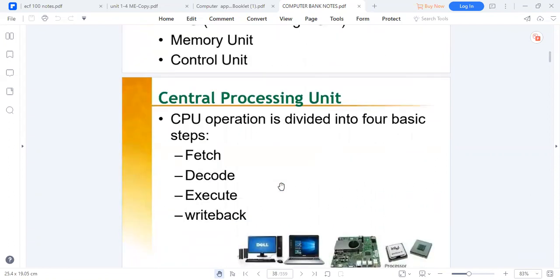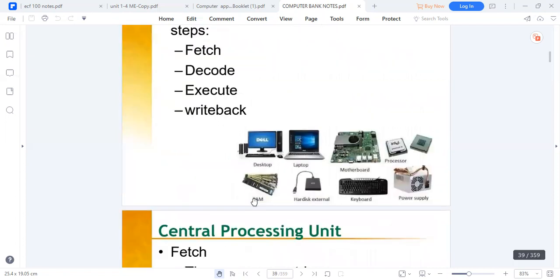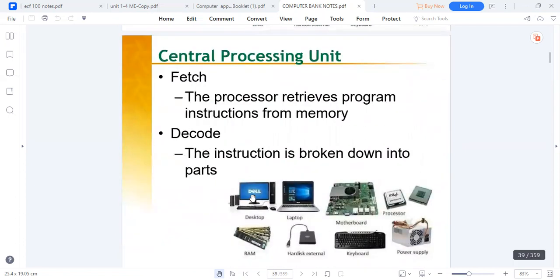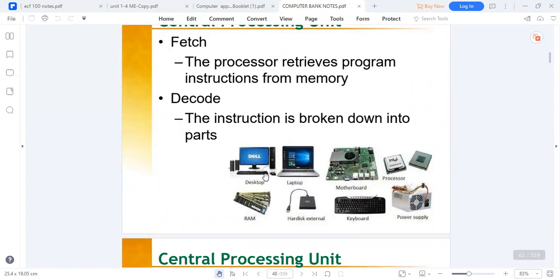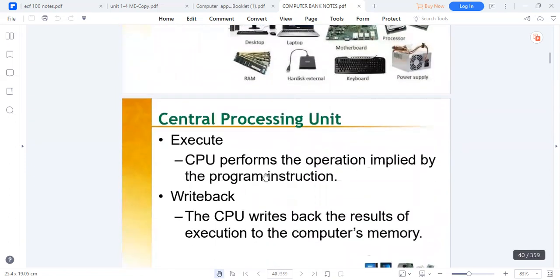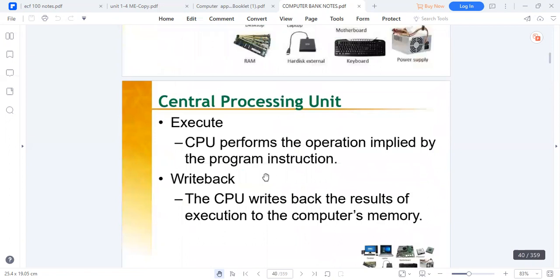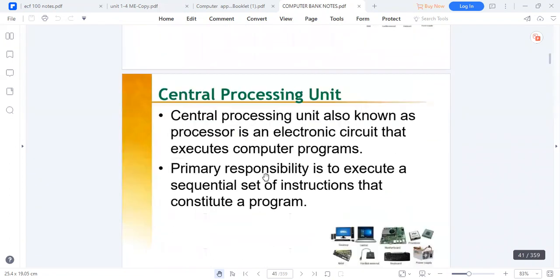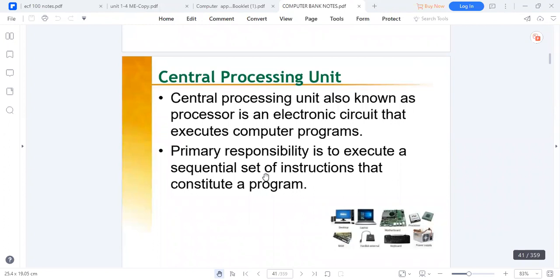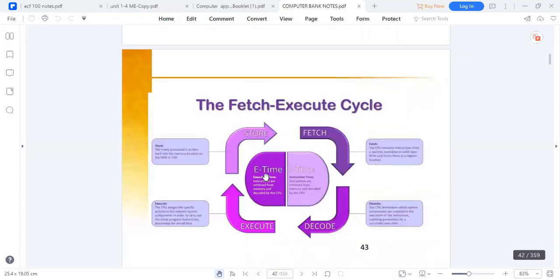The central processing unit is divided into four basic functionalities or steps: to fetch data, to decode, to execute, and to write back. Fetching implies retrieving information. Decoding is breaking down huge volumes of data into smaller parts. Executing means performing the operation as implied by the instruction. Write back gives back the results as per memory instruction.